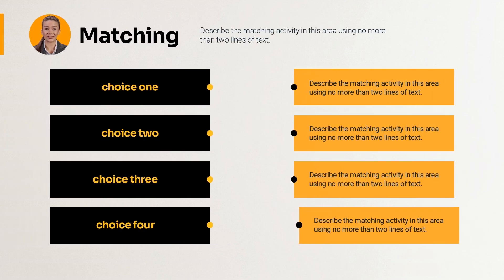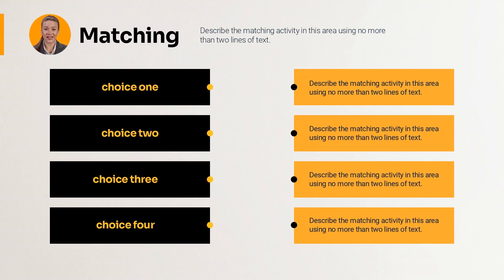The first interaction type will be matching. On the left side, you have space for four different types of choices that your learner will match with four different types of answers. Don't forget to scramble your answers on the right so that your learners have to think about which choices match.